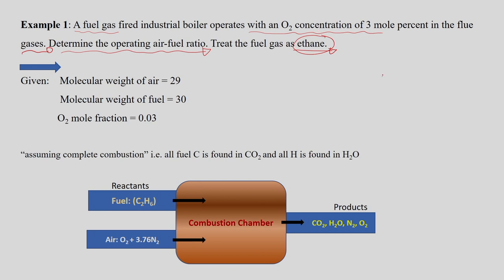Ethane is C2H6, used as fuel in the combustion process in the boiler, producing CO2 and H2O as stable compounds and releasing heat. The molecular weight of air is taken as 29, and the molecular weight of the fuel (C2H6) is 30. The mole fraction of oxygen in the product gas is 3% — that is, 0.03.